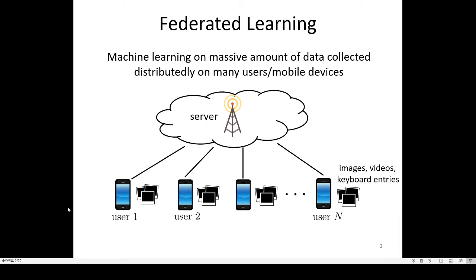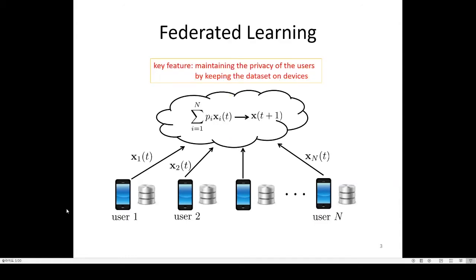Federated learning is a distributed training framework that has received significant interest in recent years. It trains machine learning models over the vast amount of data collected on mobile devices. One of the key features of federated learning is maintaining the privacy of users. To do so, the training dataset of each user is kept on the user's devices instead of being sent to a central server. In this framework, training is coordinated by a central server who maintains a global model.